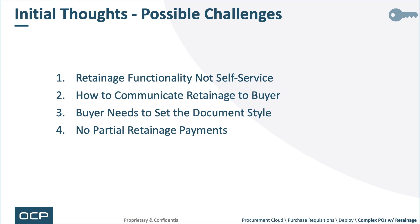Fourth, there are no partial retainage payments — it's all or nothing at the end of the project; you can't pay out some and hold some back. Fifth — and this stands out from a procurement perspective — the way retainage is set up, it holds back a portion of the PO line from invoicing payment. So the line may show as fully paid, but in actuality you've retained 10–15% of it. You may therefore need to account for that rather than showing it all as an expense. These are initial thoughts and possible challenges.